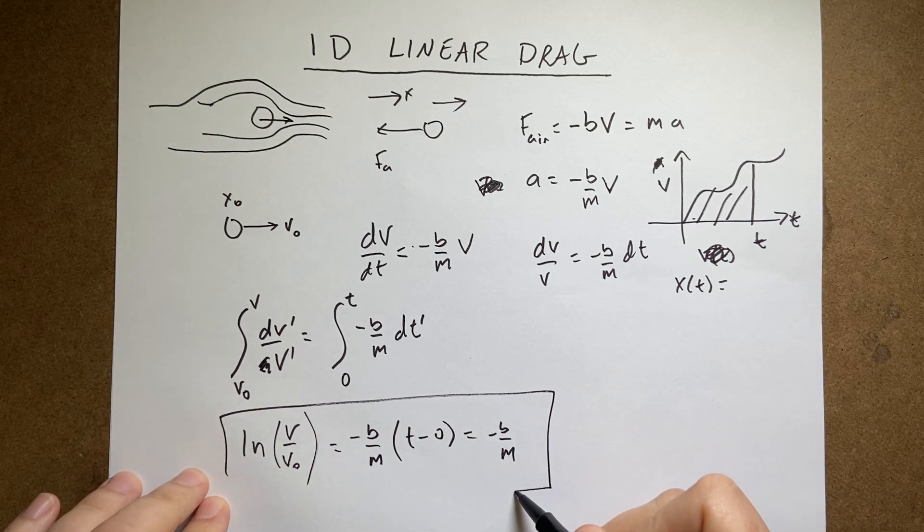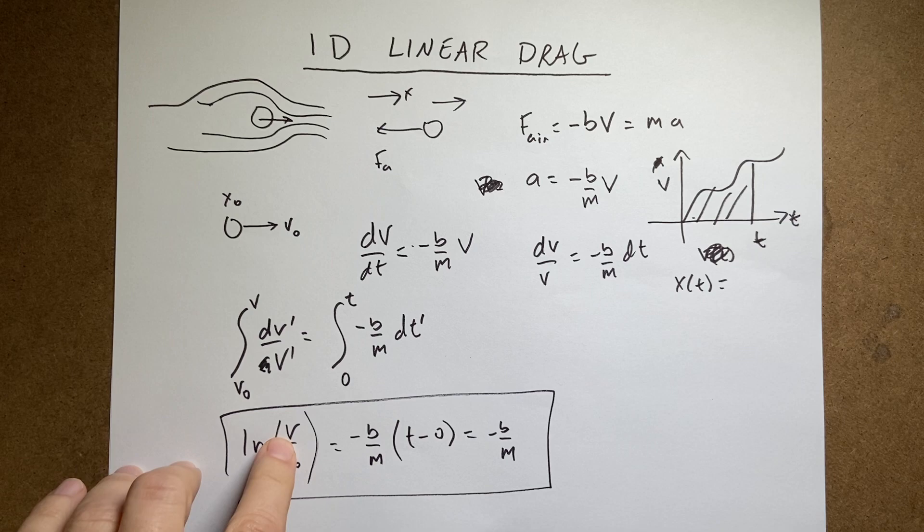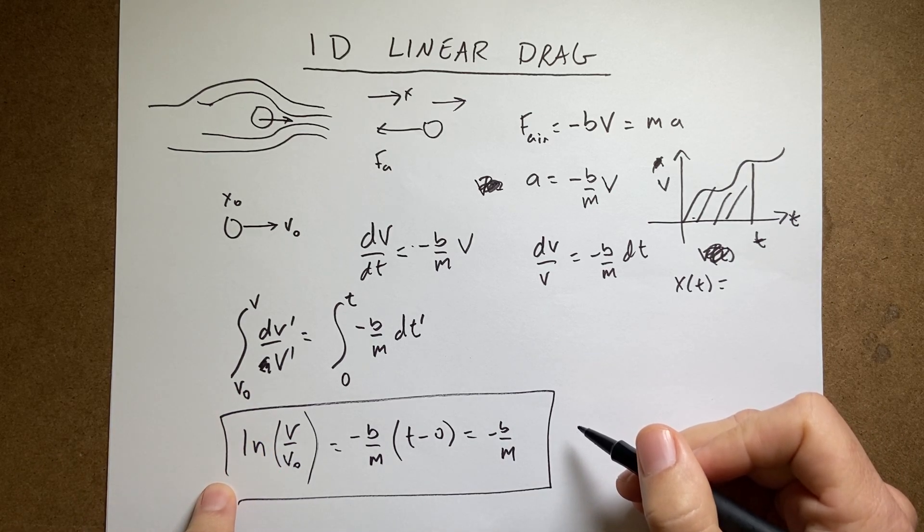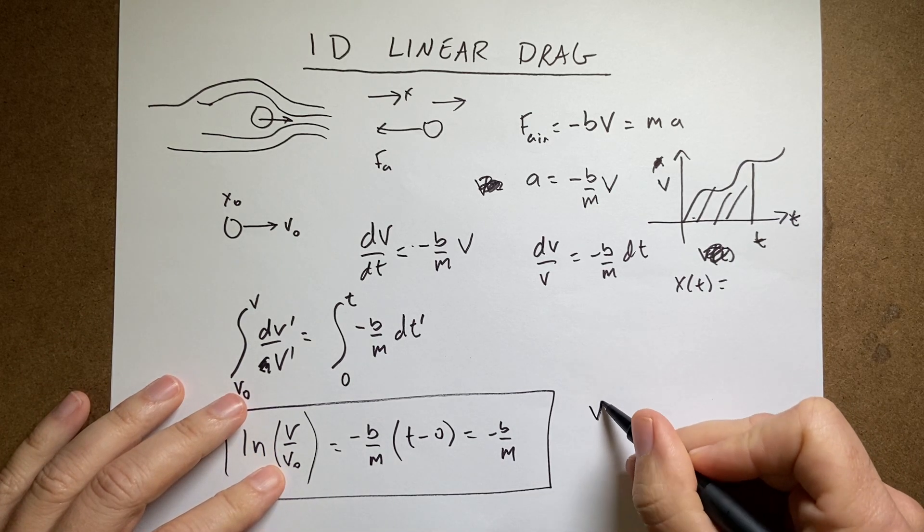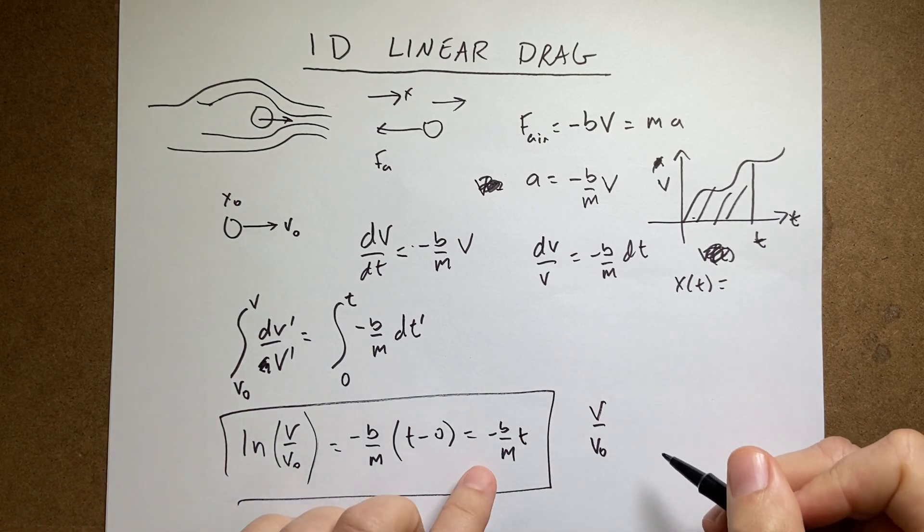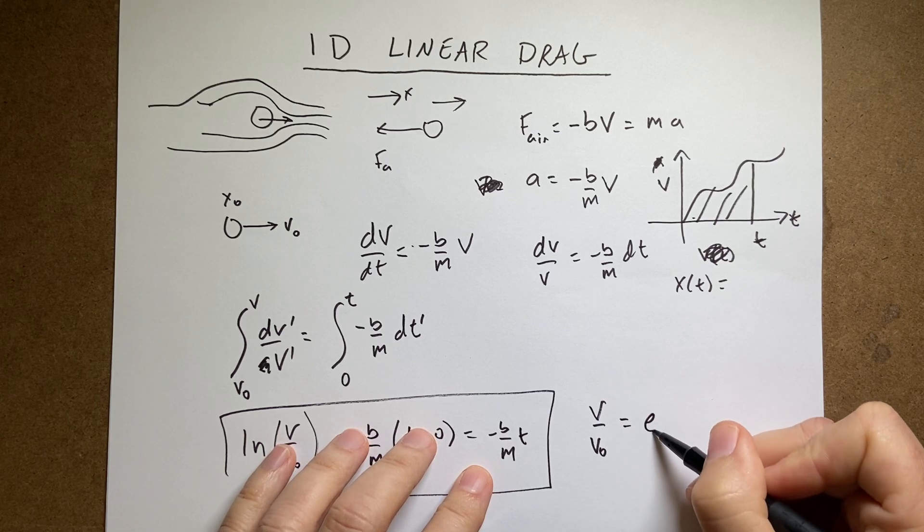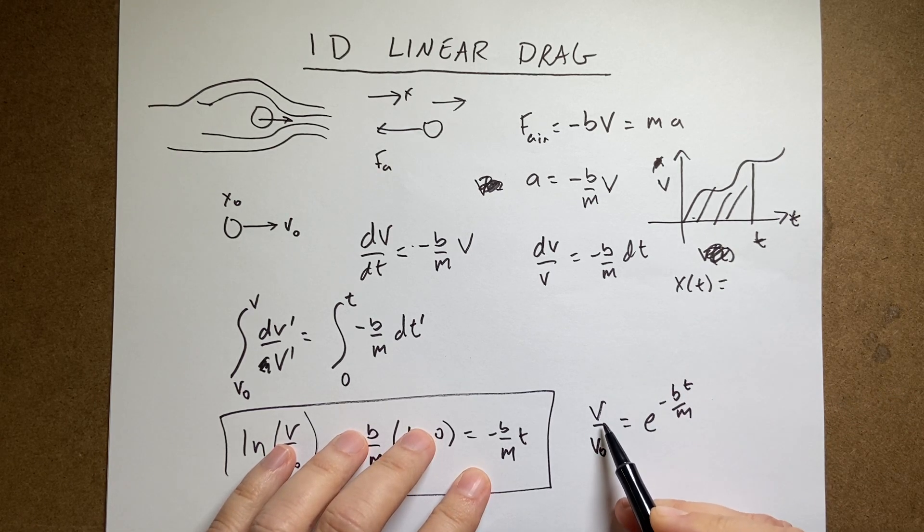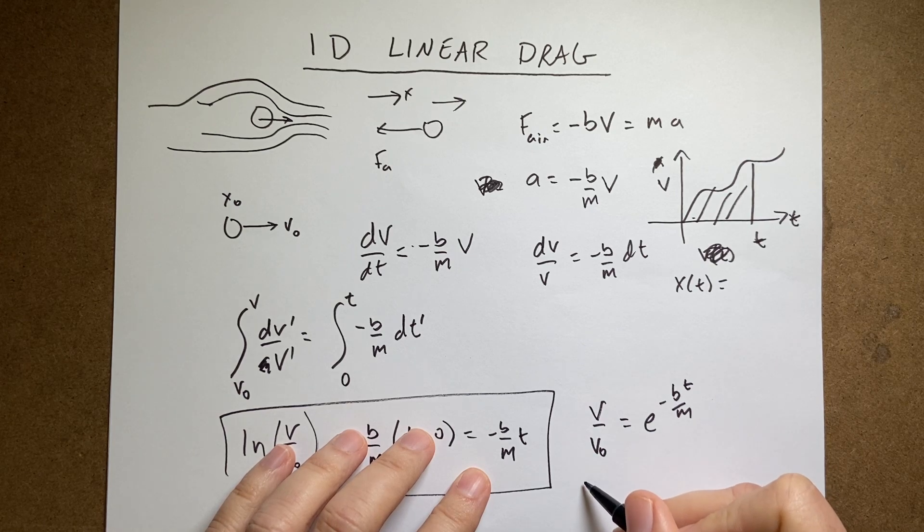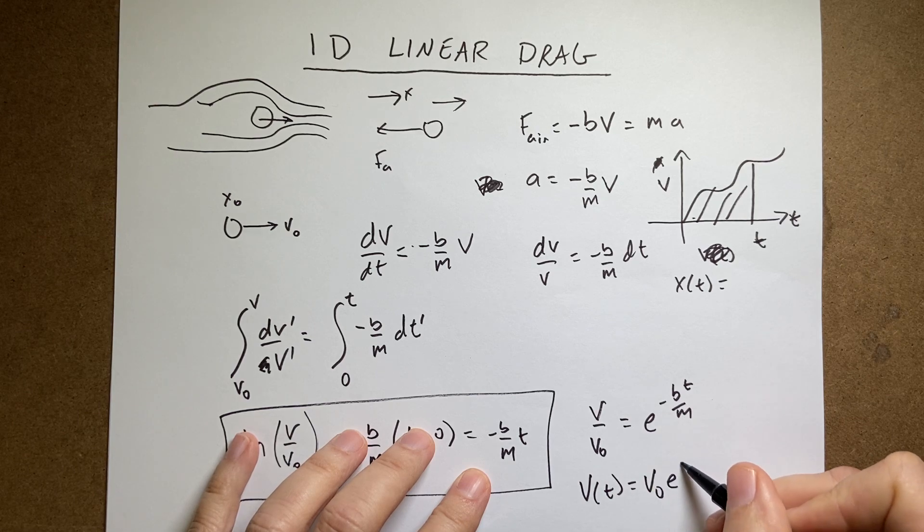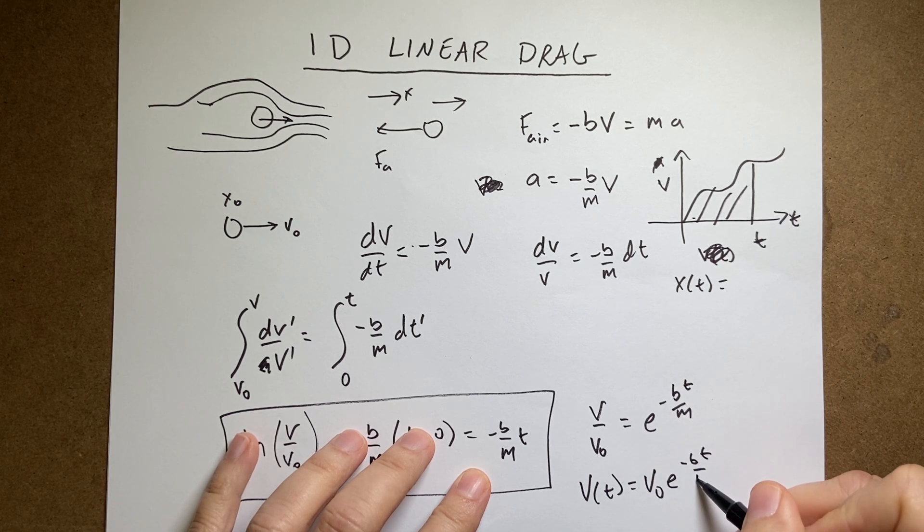But this is my answer for the, but I want to get velocity as a function of time. So I'm going to take E raised to both sides. So if I take this exponential of this side, I get V over V0. And on this side, I get, oh I'm sorry, T. I get equals E to the negative BT over M. And then I can multiply both sides by V0, and I get V as a function of time equals V0 E to the negative BT over M.